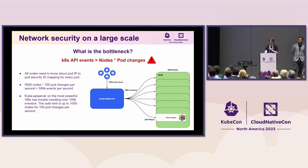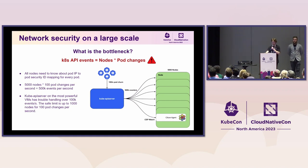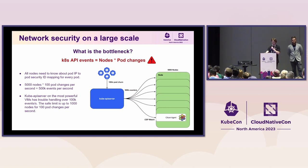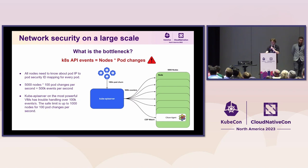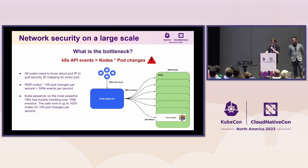What was the bottleneck when scaling network policies to 5,000 nodes and 200,000 pods with 100 pod changes per second? Every node needs to know about IP-to-pod security identity mapping for every pod. This means that if we are changing 100 pods per second, we will have to send 500,000 events per second to all nodes. The kube API server on the most powerful machines cannot handle that much — over 100,000 events per second are already troublesome. The safe limit would be about 1,000 nodes for 100 pod changes per second.